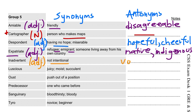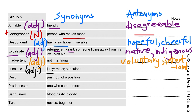The antonyms of inadvertent are voluntary and intentional. Next is luscious. Luscious is an adjective and its synonyms are juicy, moist, and succulent. Its antonyms are dull and unappetizing.